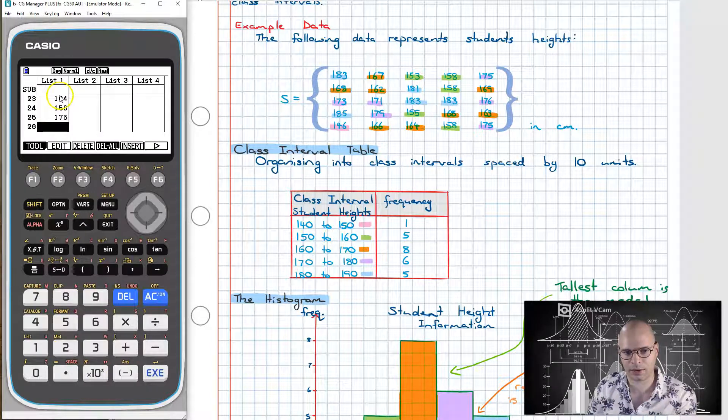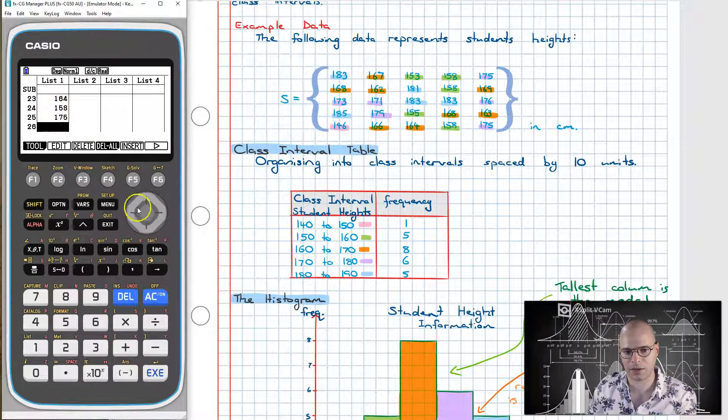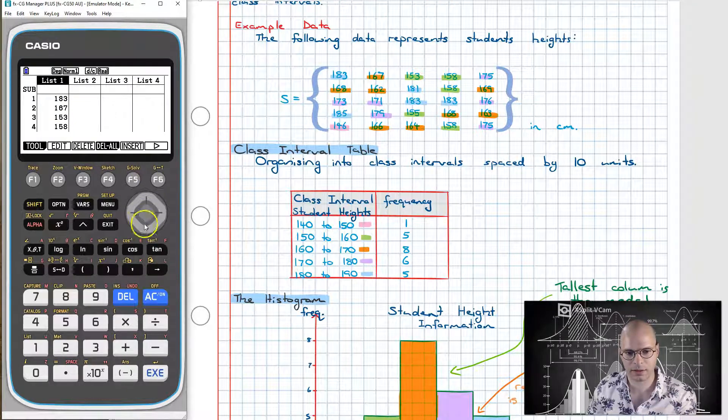Now all of my data is currently in memory. I have 25 data points. To go to the top I simply press down on the d-pad here. Now the next step is I want to be able to graph this.